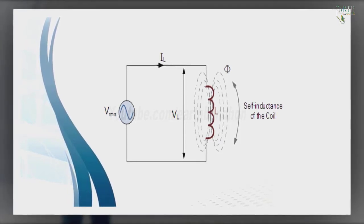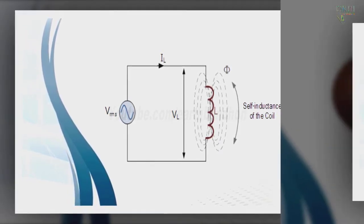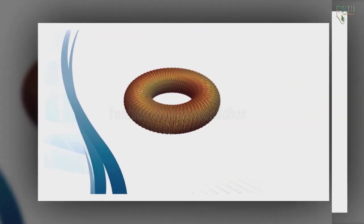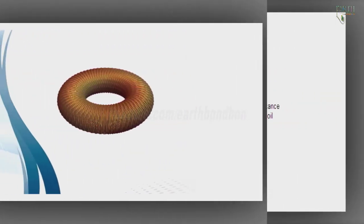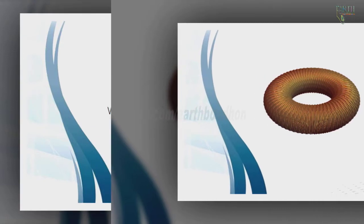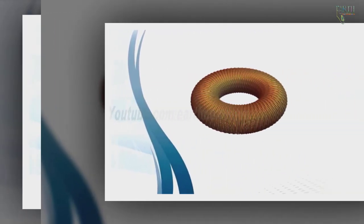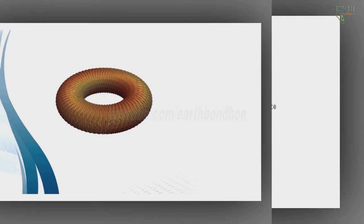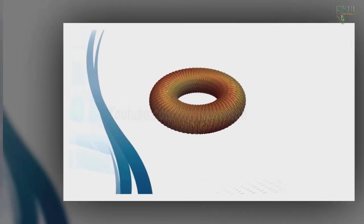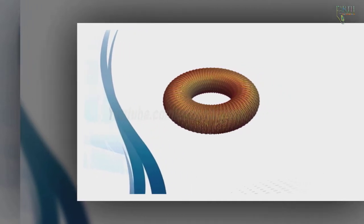When the current flowing through an inductor changes, the time-varying magnetic field induces a voltage in the conductor, described by Faraday's law of induction. According to Lenz's law, the direction of induced electromotive force (EMF) opposes the change in current that created it.